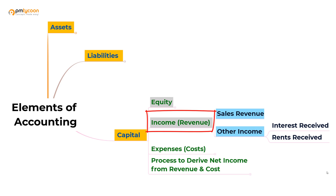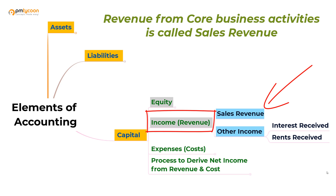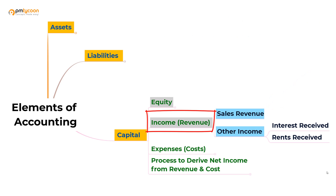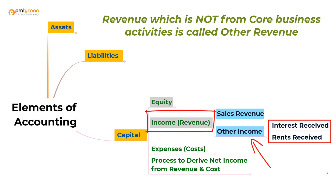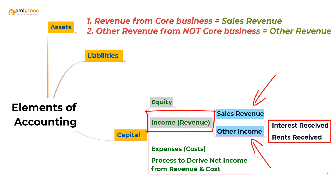Let me give an example. Let's say we have a mobile manufacturing company. If the company is generating revenue from the sales of mobile phones, then it is called revenue from its core business activities. The same company can have many more assets, many more buildings, or may have deposited some cash in banks. They may get revenue in the form of interest from the bank, or if they have leased out land, money in the form of rents. These are revenues that a company is receiving not from its core business activities.